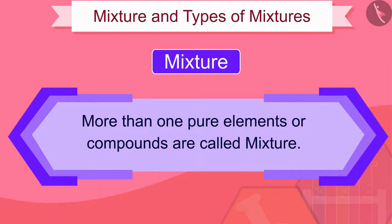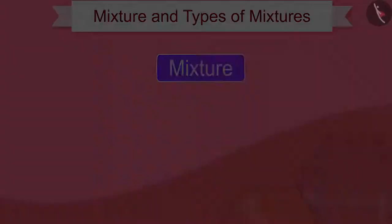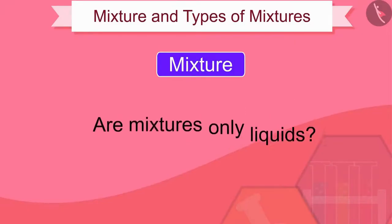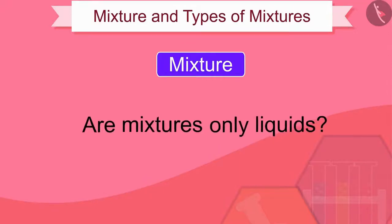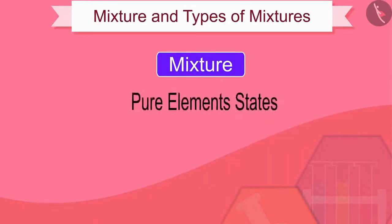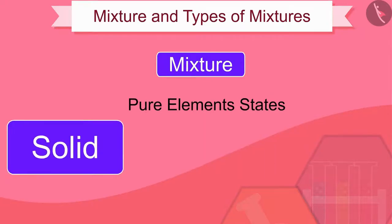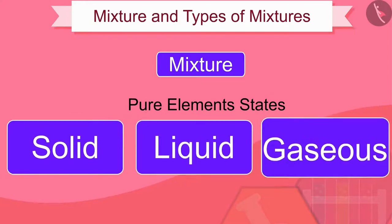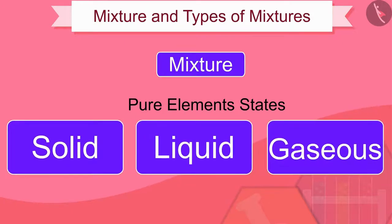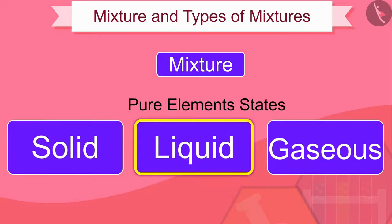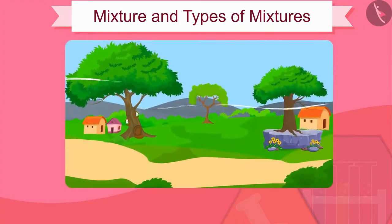Substances like sea water, which consist of more than one pure element or compound, are called mixtures. Are mixtures only liquids? No — pure elements, whether solid, liquid, or gaseous, can be found in any of these states. Mixtures can also be found in any of these states.